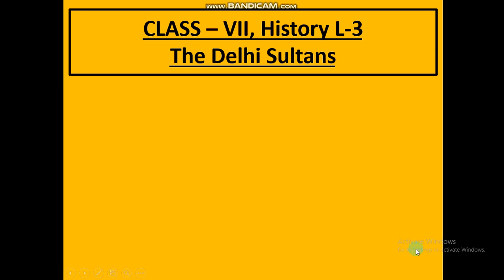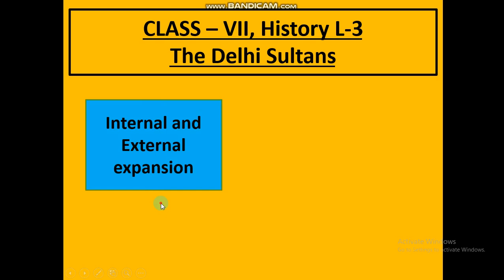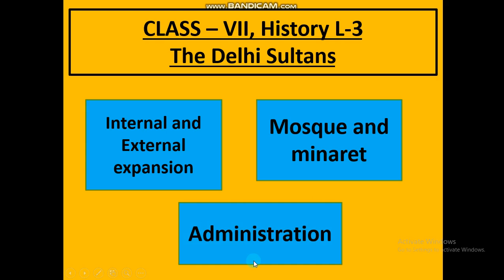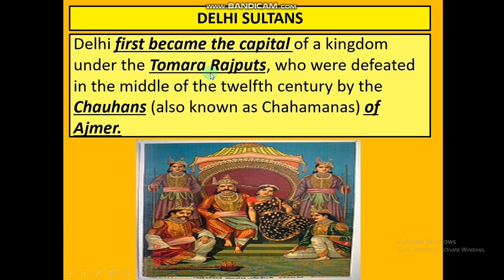Hello dear students, welcome to our education. Today we are going to read Class 7th History Lesson 3: The Delhi Sultans. Important topics we are going to cover in this lesson are internal and external expansion, mosque and minaret, and administration. Let us start.